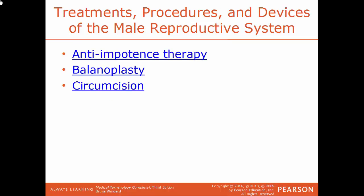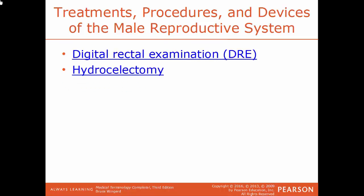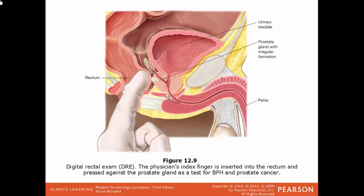Specific treatments and procedures for the male system: anti-impotence therapy is any therapy used to treat impotence. Balanoplasty is the surgical repair of the glans penis. Circumcision is the removal of the foreskin of the penis. DRE, a digital rectal examination, is where a finger is inserted into the rectum. Hydrosoelectomy is the surgical removal of a hydrocele. In a DRE, the finger is inserted into the rectum to feel the prostate gland, a good way to check for prostate issues.